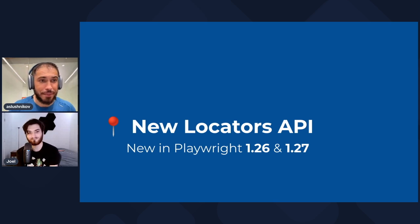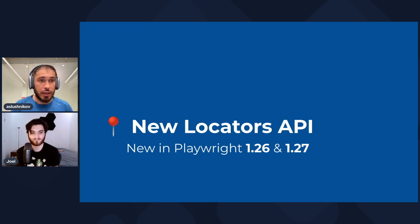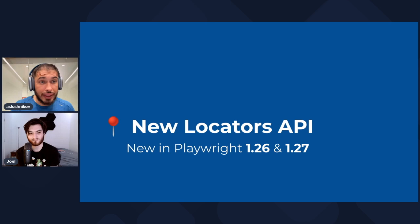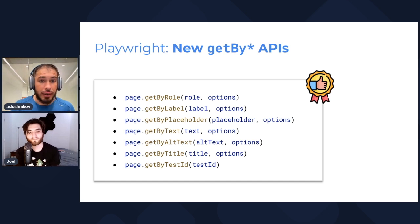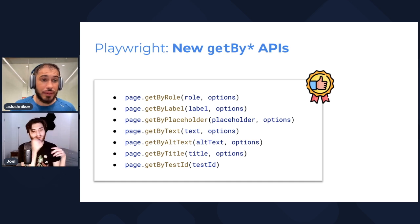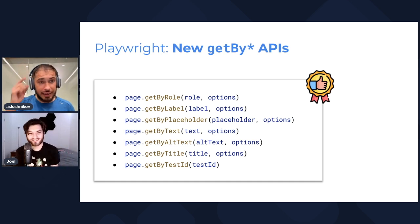The first feature is the new Locators API. Playwright is already very capable of selecting elements on screen. We have selector engines and selectors, and our users were asking for good guidance on how to create locators. Now we have this guidance in the shape of seven beautiful designated API methods for creating locators.